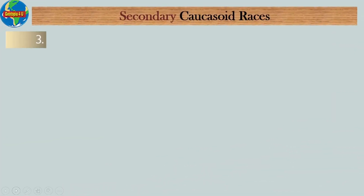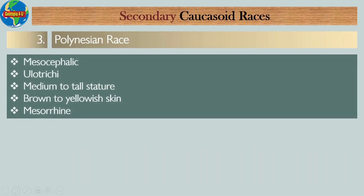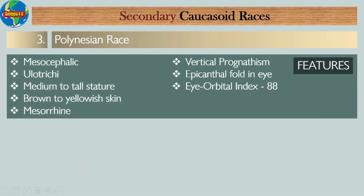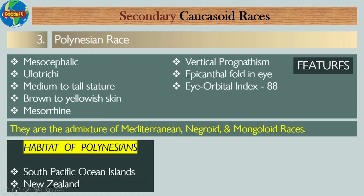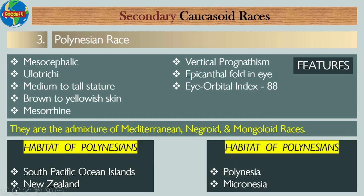Number three: Polynesian race. Their features include: they are mesocephalic; they have ulotrichous hair; they have medium to tall stature; they have brown to yellowish skin; they are mesorhine; they show vertical prognathism; they show an epicanthal fold in the eye; and their eye orbital index is 88. They are an admixture of Mediterranean, Negroid, and Mongoloid races. The habitat of Polynesians includes the South Pacific Ocean islands, New Zealand, Polynesia, and Micronesia.